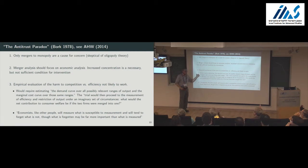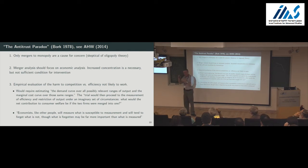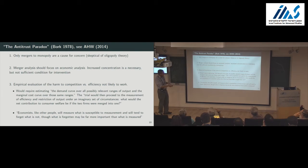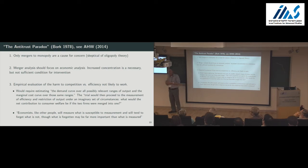A student asks: if he's rejecting economic theory and economic empirics, what's left of economic analysis? The speaker responds that the book is fascinating — it's more of a bargaining position meant to shift the debate, not so much an academic book, though it is very influential. Bork also makes this other point: 'Economists, like other people, will measure what is susceptible to measurement and will tend to forget what is not. Though what is forgotten may be far more important than what is measured.' For him, this is about efficiencies — he says we'll show up and it will be easy to measure the detriment to consumers or the deadweight loss, but the efficiencies, people would say these are fairy tales, and that has been a lingering problem for measured evaluation.